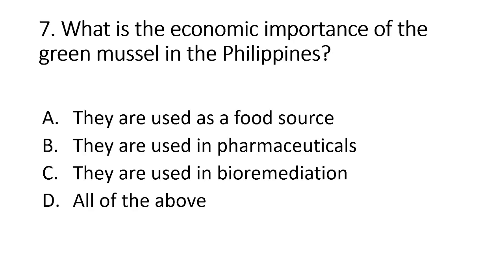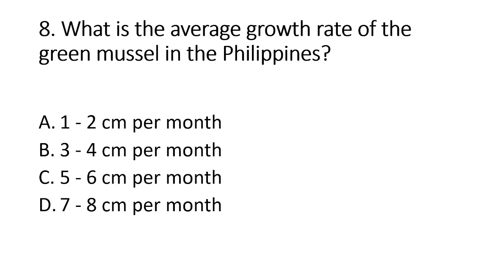Number 7. What is the economic importance of the green mussel in the Philippines? A. They are used as a food source. B. They are used in pharmaceuticals. C. They are used in bioremediation. D. All of the above. The answer is letter A, mussels are primarily used as food. Number 8. What is the average growth rate of the green mussel in the Philippines? A. 1–2 cm per month. B. 3–4 cm per month. C. 5–6 cm per month. D. 7–8 cm per month. The answer is letter A, mussels can grow 1–2 cm per month.